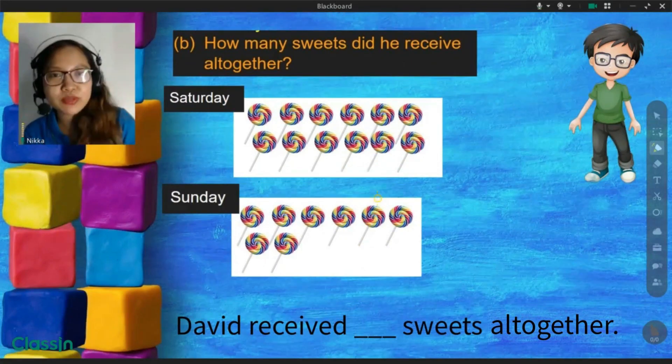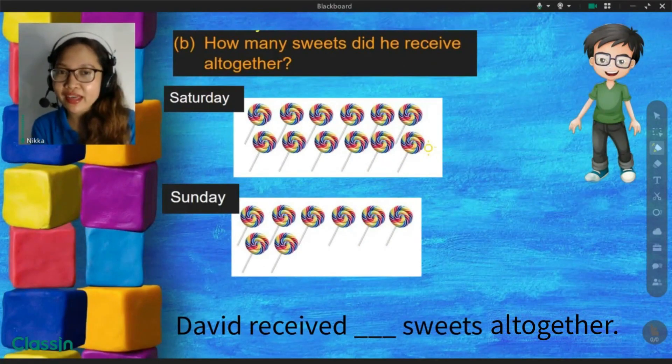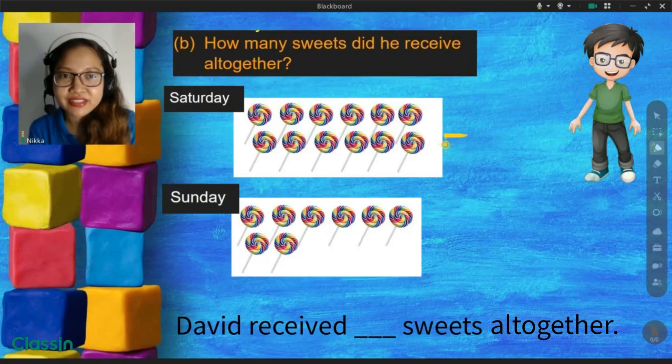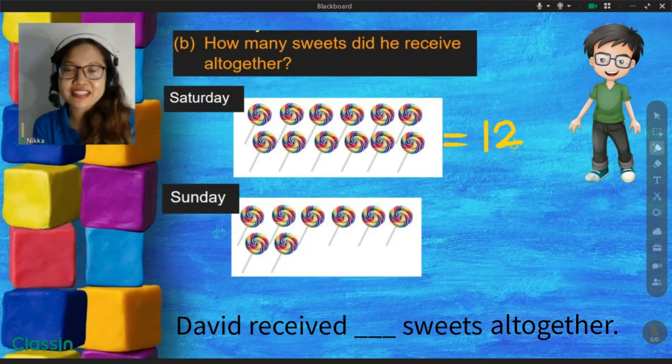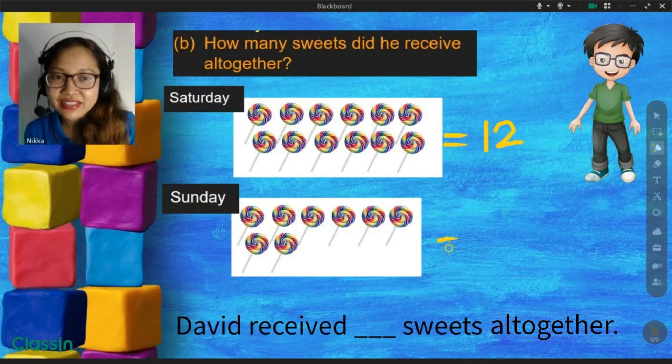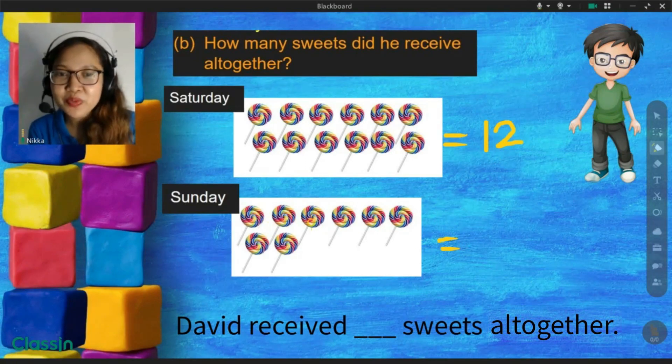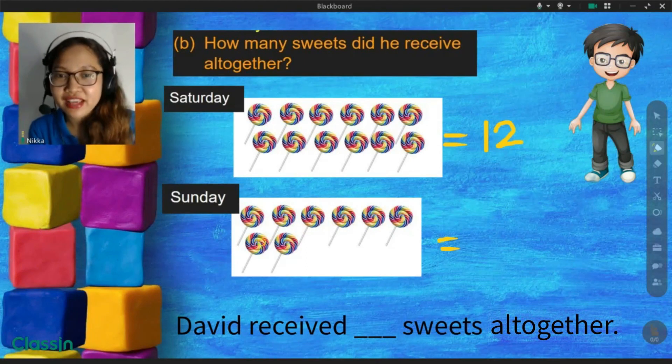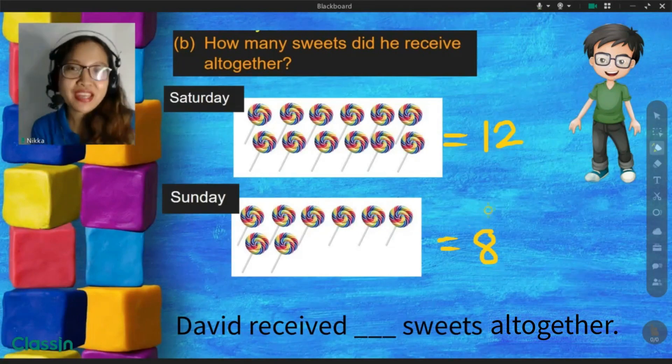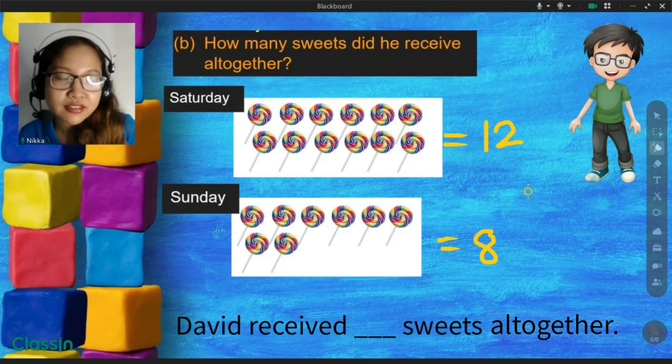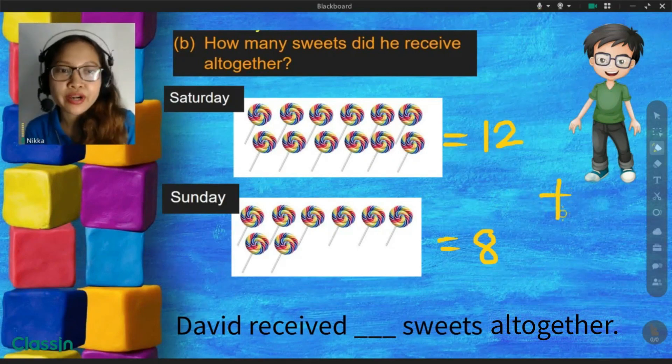How many sweets did he receive all together? Saturday, he received, well, sweets. On Sunday, he received, 1, 2, 3, 4, 5, 6, 7, 8. So, here, are we going to add or subtract?